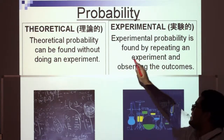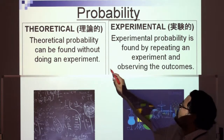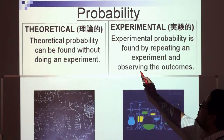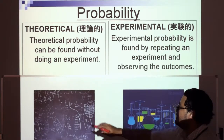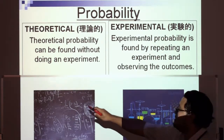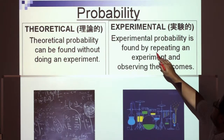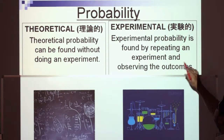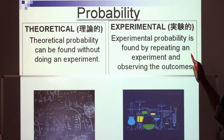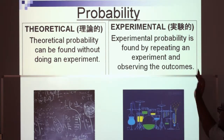Probability has two main parts. Theoretical probability can be found without doing an experiment — using equations and formulas. The other type is experimental probability, which is found by repeating an experiment and observing the outcomes — that's the practical part.